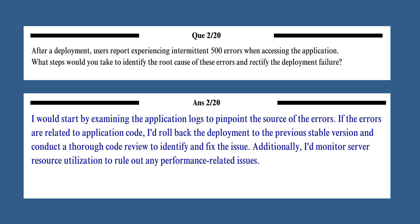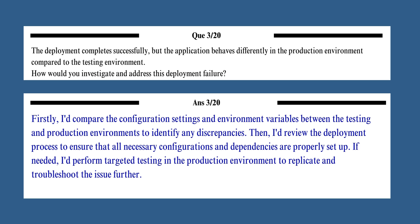Here's the answer. I would start by examining the application logs to pinpoint the source of errors. If the errors are related to application code, I would roll back the deployment to the previous stable version and conduct a thorough code review to identify and fix the issue. Additionally, I would monitor server resource utilization to rule out any performance-related issues.